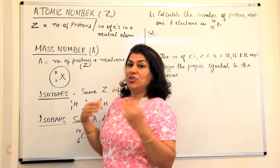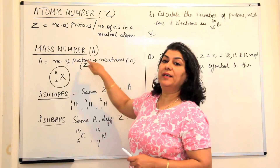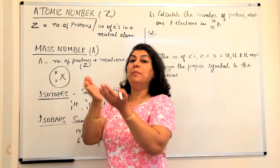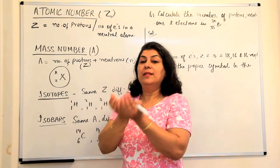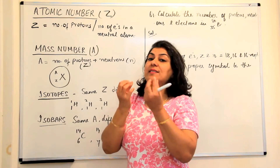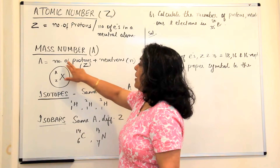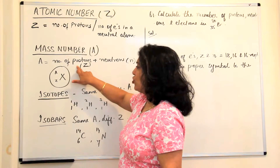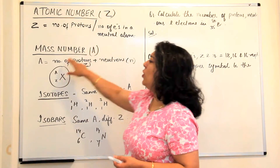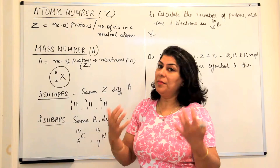The next number that we should know is the mass number. The mass number is represented by the capital letter A, and it means the mass in an atom. The mass is all concentrated in the nucleus and it is the sum of the protons and the neutrons. Therefore, mass number is the sum of atomic number and the number of neutrons.